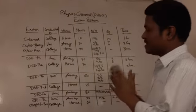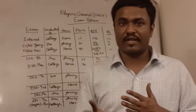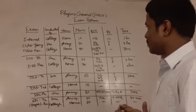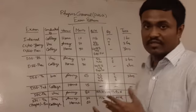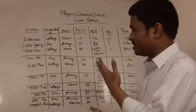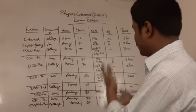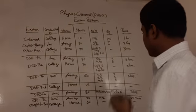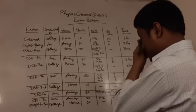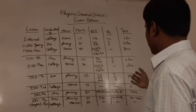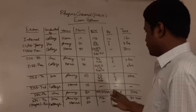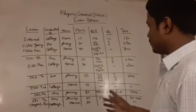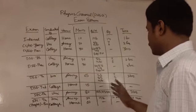That is basically all the types of exams you're likely to take in your undergrad for a general degree in physics. As you can see, some exams are conducted by the college and some by the university, with different weightages. The practical exams are all three hours in duration.